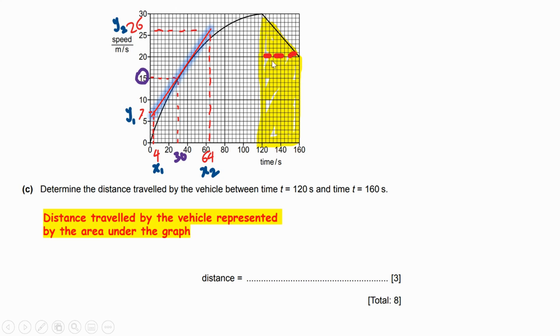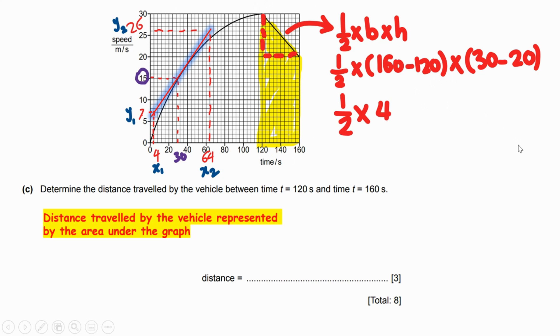This area is a trapezium. Divide it into two sections. I draw the dotted line here, one triangle, one rectangle. The area of the triangle is half base times height, half times the base is the difference between 160 and 120 times the height is the difference between 30 and 20. With our calculator it's easy to do this one. Half times 160 minus 120 is 40, 30 minus 20 is 10. Half of 400 is 200, so this is the area of the triangle.